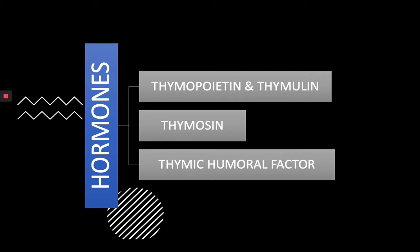After selection, hormones produced by the thymus complete the maturation. Thymopoietin and thymulin are hormones involved in the process of turning T cells into different types of disease fighters — such as cytotoxic T cells, helper T cells, and regulatory T cells. Thymosin is a hormone which boosts the immune system's response and can also stimulate other hormones that control growth.